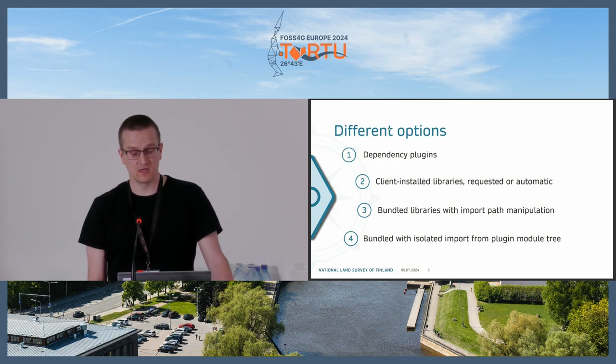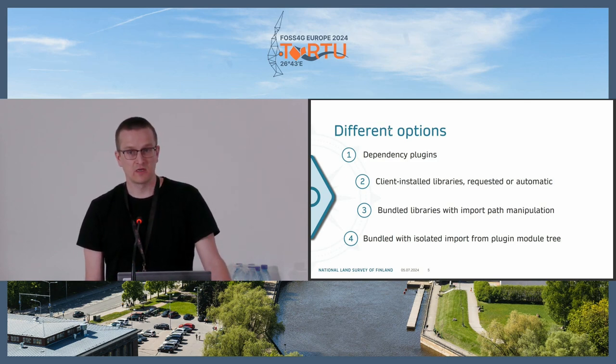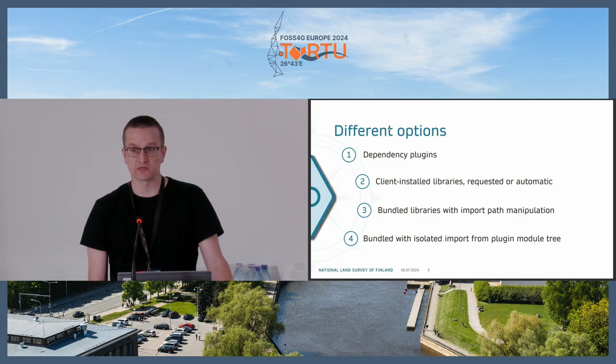The different options for dependency usage could be: dependency plugins — that's a QGIS built-in tool for that. Another example could be client-installed libraries, where you request the install or maybe in some cases do an automatic install. One example could be bundled libraries with import path manipulation, where you just include code and use import tricks. And one final example could be isolated imports, where the dependency is included in your code with a different structure so that the imports are isolated per version.